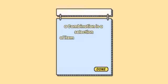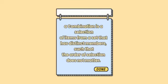What is a combination? A combination is a selection of items from a set that has distinct members such that the order of selection does not matter.